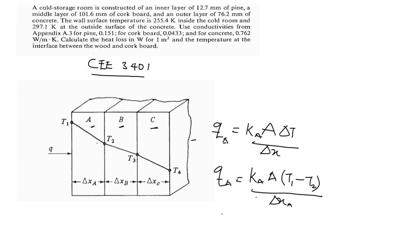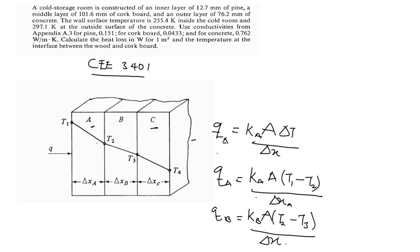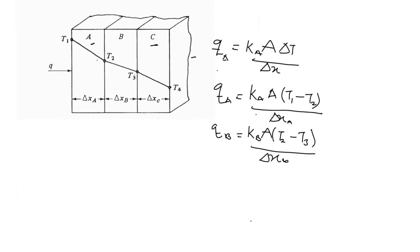Exactly the same for wall B: QB is going to be KB — that's the conductivity of B — times the area, times DT. DTB is going to be T2 minus T3, all divided by DXB. While for C also: QC is equal to KC, that's the conductivity of C, times the area, into T3 minus T4 — the change in temperature within C — divided by DXC, that's the length of C.